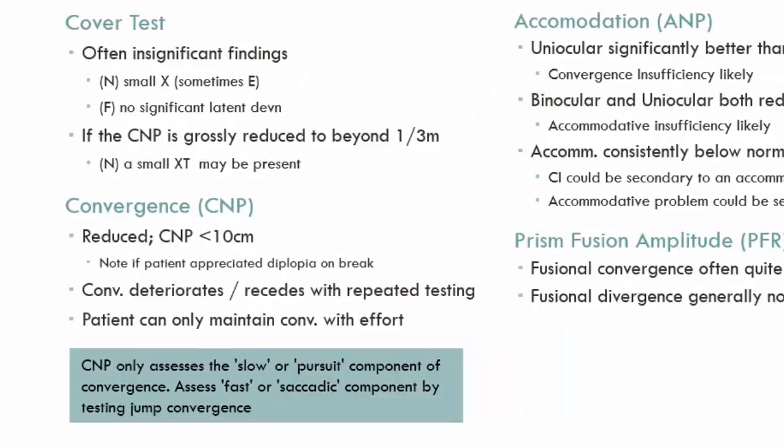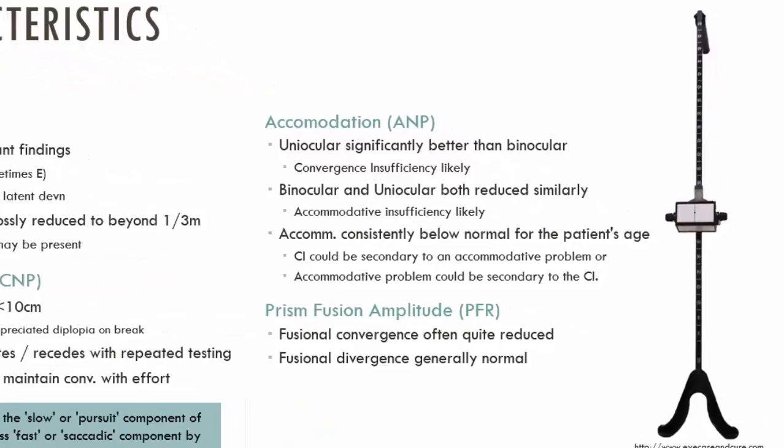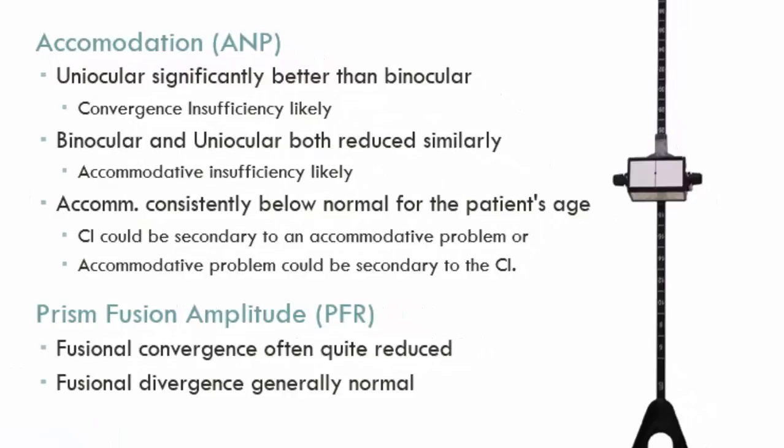Accommodation is a good idea to assess in patients with suspected CI. Comparing uniocular accommodation with binocular accommodation can give indications as to whether the issue is accommodative or related to convergence. Using the RAF gauge, you ask the patient when the letters first blur — assessed right and left separately, then binocularly with both eyes open. If the patient has CI, generally the uniocular accommodation will be significantly better than the binocular accommodation, highlighting a convergence issue rather than an accommodation issue.